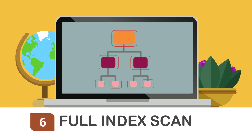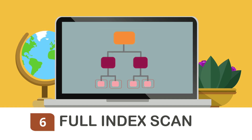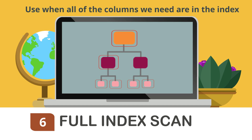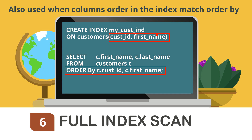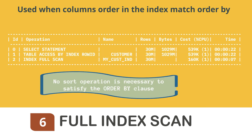A full index scan doesn't actually read all of the blocks in the index the way the name implies. You do read all of the leaf blocks, but only enough of the branch blocks to find the first leaf block. It is typically used when all of the columns needed for the query are present in the index and the order by clause in the query also matches the ordering of those columns in the index. If the columns in the index match the order by clause, the data is already in sorted format and no additional sort operation is needed.